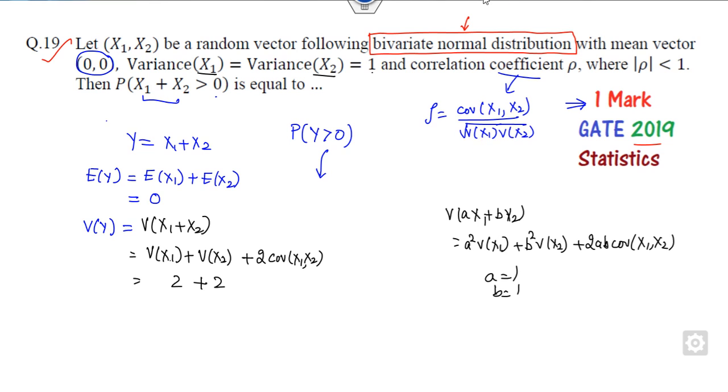So this value, variance of x1 is 1, variance of x2 is 1, so what is the covariance? Nothing but rho. So what is that? This is 4 plus of this one. Now we can start from here.